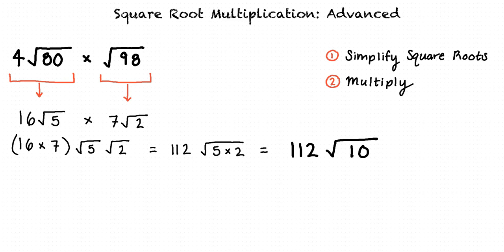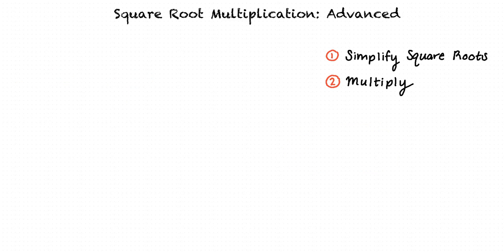And our final answer is 112 square root of 10. That is correct. Let's try one more example. Say we are given the square root of 50 times 4 times the square root of 98, and we are asked to simplify. First, we'll simplify each square root expression.